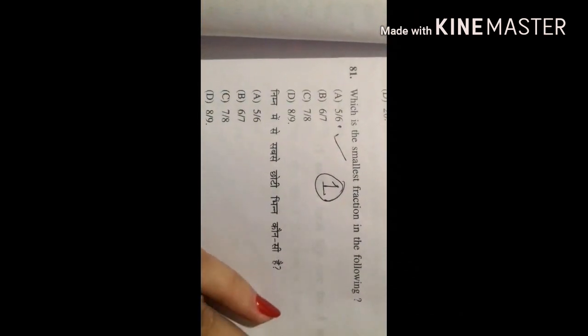And 81st question. We have to find the smallest fraction of them all and 5 over 6 is the correct answer. Option number A is the correct answer for 81st question.